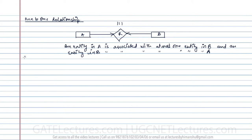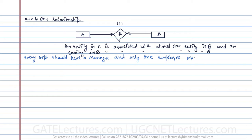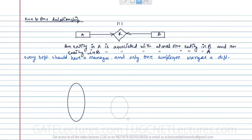For example, consider this relationship: every department should have a manager, and only one employee manages a department. Managers are also employees, so you can denote it like this — this set represents employees, this represents the relationship 'manages', and this represents the departments.